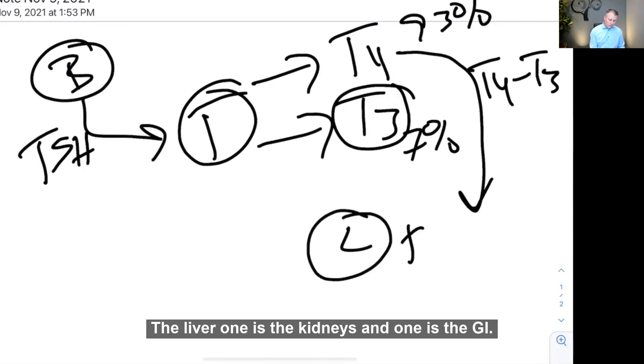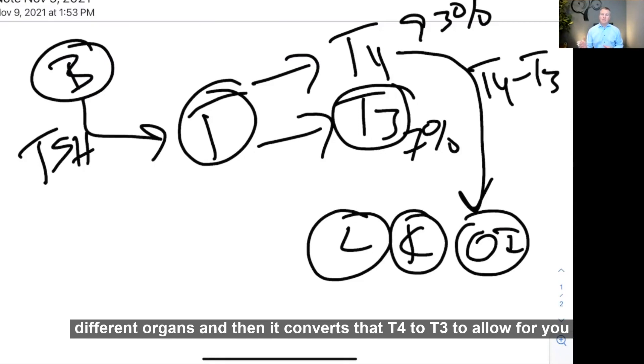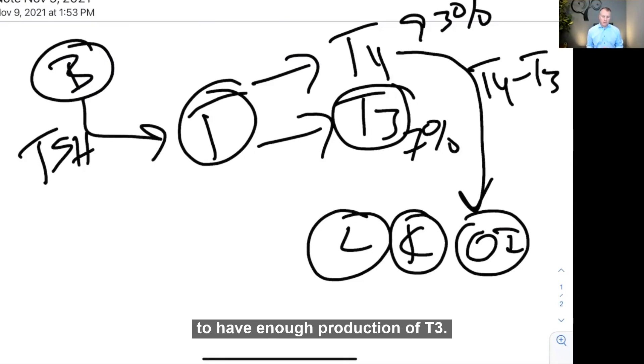One is the liver, one is the kidneys, and one is the GI. So these three areas is where that conversion happens. So your thyroid produces T4, it then gets put into those three different organs, and then it converts that T4 to T3 to allow for you to have enough production of T3.